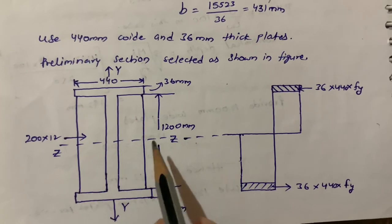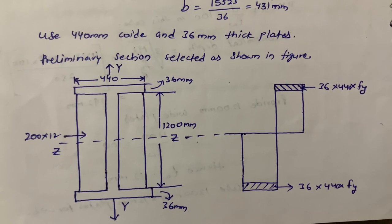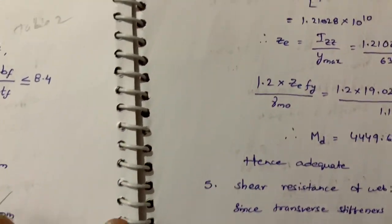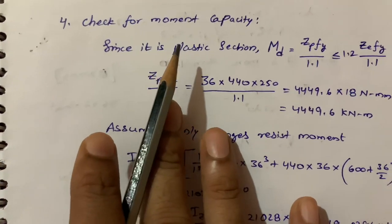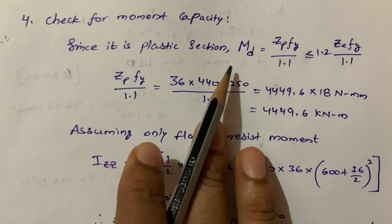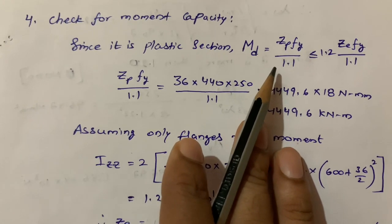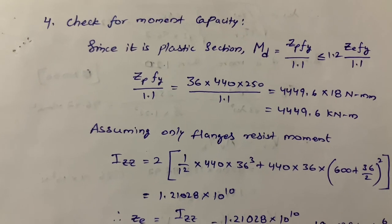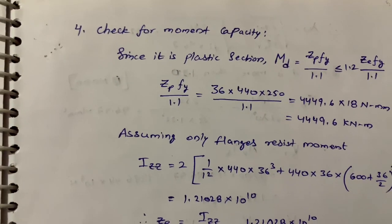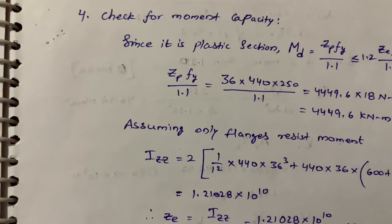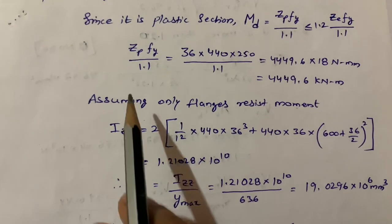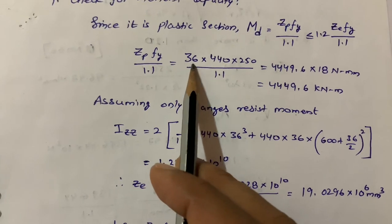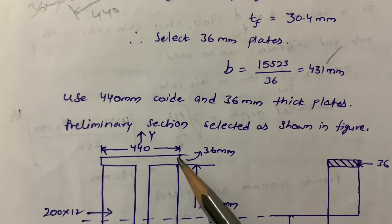The cross-section is: flanges of 440 mm wide × 36 mm thick, web of 1200 mm deep × 12 mm thick — a classic I-section plate girder about the z-z axis. For the moment capacity check (plastic section), MD = Zp × fy / 1.1, subject to ≤ 1.2 × Ze × fy / 1.1. We use this formula to calculate Zp.